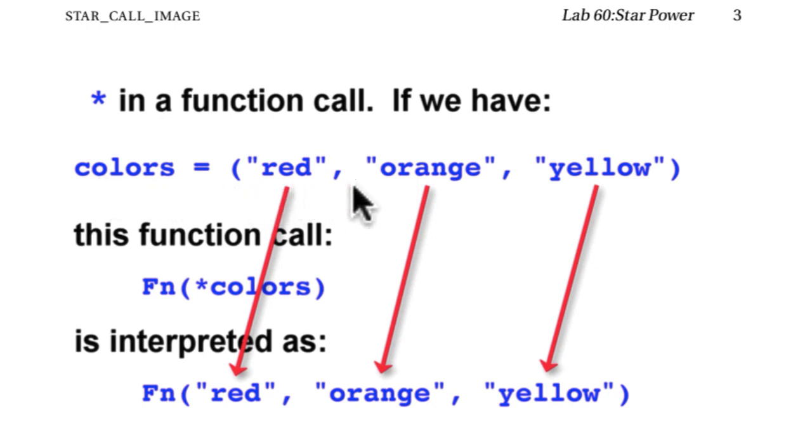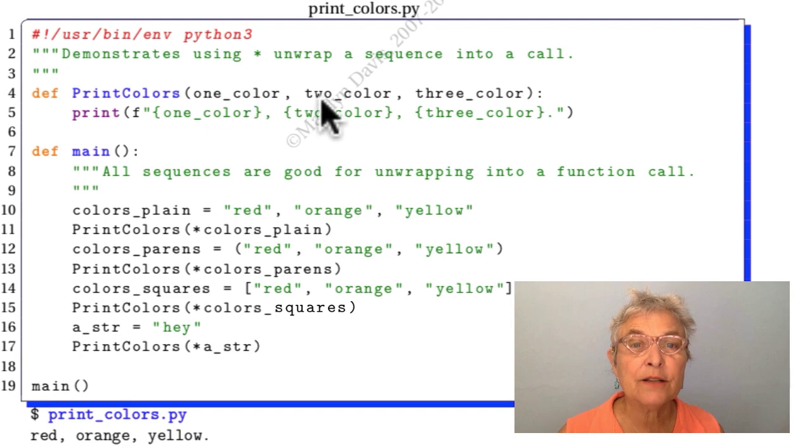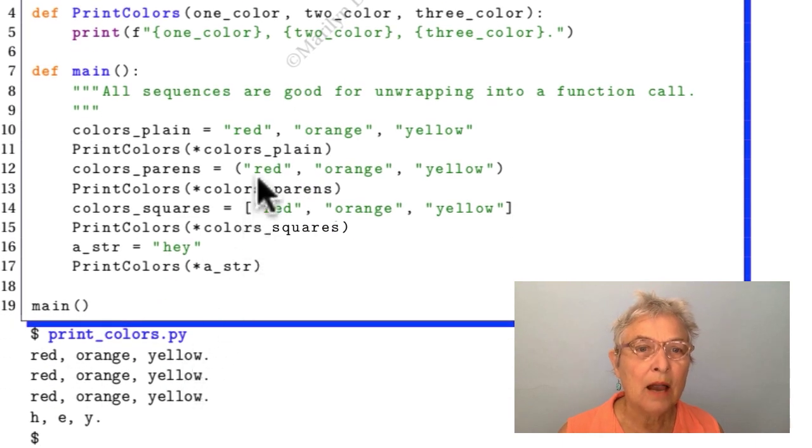We have colors, which is a nice tuple of colors. If I call a function and I say asterisk colors, it's exactly as if I call the function and put in the individual elements of that tuple, just like that. Here we'll demonstrate it with some code. Print colors takes in three colors and it prints them. Now here in our main, I have a tuple that doesn't have round brackets on it. Still a tuple. Doesn't matter. And if I do asterisk colors, plain, I get red, orange, yellow. Here I am doing it with parens. I get the very same thing. Here I'm doing it with square brackets. A list. We'll learn all about them.